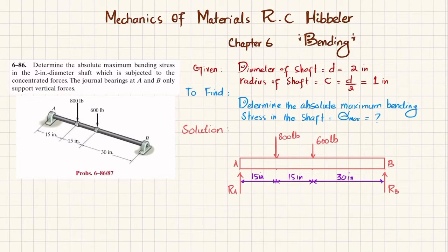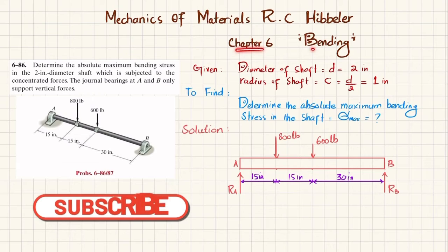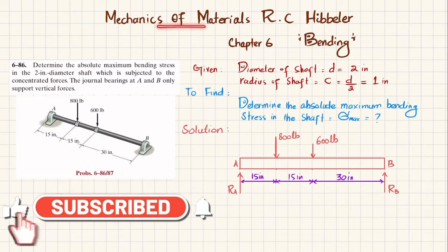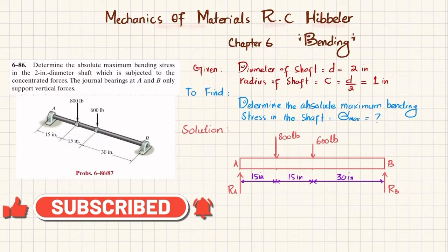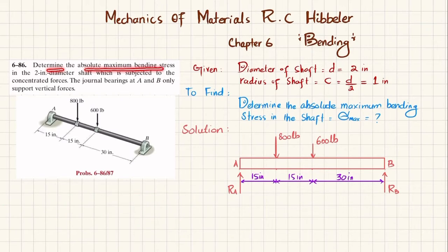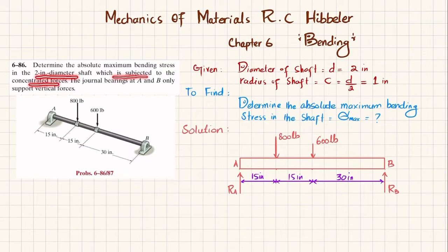Welcome back. Problem 6-86 is taken from Chapter 6 on bending, from the book 'Mechanics of Materials' by R.C. Hibbeler. The statement is: determine the absolute maximum bending stress in a two-inch diameter shaft which is subjected to concentrated forces.